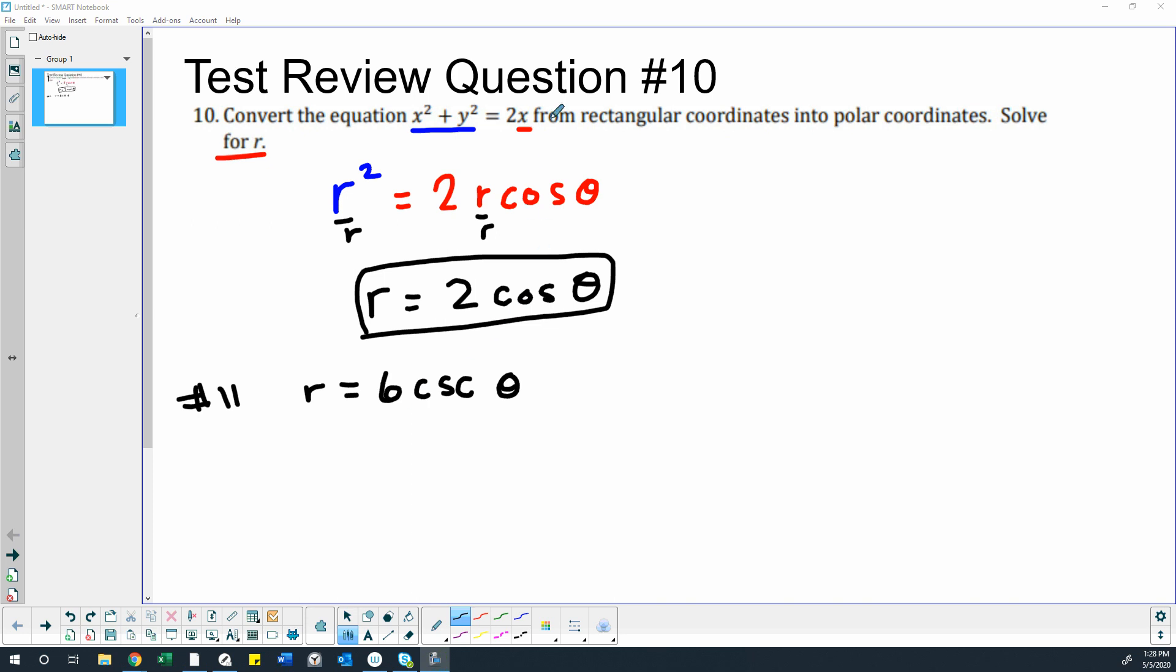Alright, this time we're going the opposite direction. We're changing from polar to rectangular. It's kind of the same idea. Notice how with this problem at the end, we divided r to put it in the form we wanted it in.